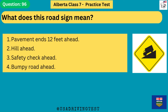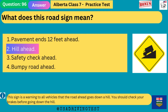What does this road sign mean? 1. Pavement ends 12 feet ahead. 2. Hill ahead. 3. Safety check ahead. 4. Bumpy road ahead. The answer is 2: hill ahead. This sign is a warning to all vehicles that the road ahead goes down a hill. You should check your brakes before going down the hill.